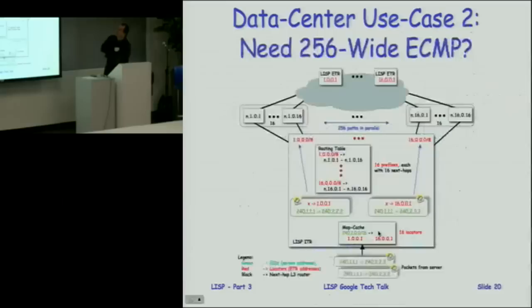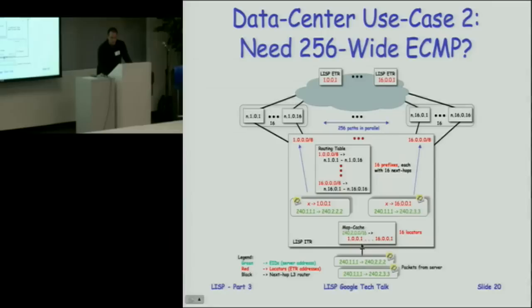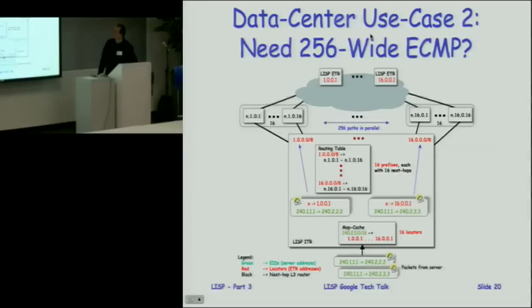The second data center use case: scaling bandwidth. Everyone needs 40 gig and 100 gig. Today people get 160 gig via 10 times 16 where 16 is the number of ECMP paths the ASIC supports. If you add LISP here, you can get 256 paths wide. An encapsulating LISP ITR matches incoming packets to one of 16 different locators via the map cache, each locator matches a FIB route mapping to 16 different next hops — using hashing, you get 256-wide distribution going to the same 16 ETRs that decapsulate and deliver, giving 16 times 16 paths because of the level of indirection.